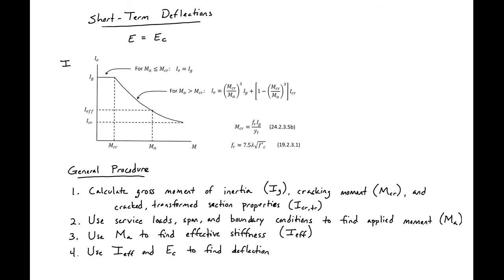In order to calculate our short-term deflections, we need to make a couple of assumptions. The first assumption is that we remain in the linear elastic region for our concrete, so our E, or material stiffness, is just going to equal the stiffness of our concrete, which we can find using the ACI expressions. Second, we need to look at our I. ACI allows us to find our I based on an applied moment MA. If MA is less than our cracking moment, then we can use I gross for our section. If MA is greater than the cracking moment, ACI gives us an expression to find I varying between I gross and I cracked transformed.